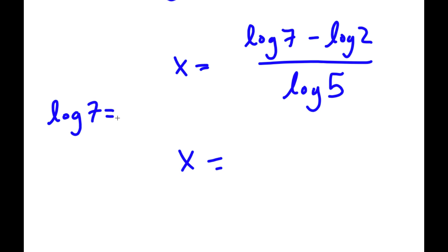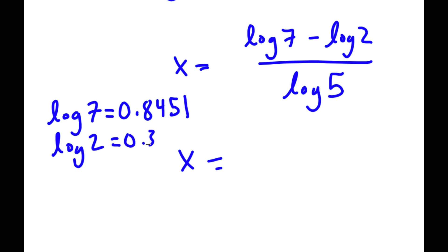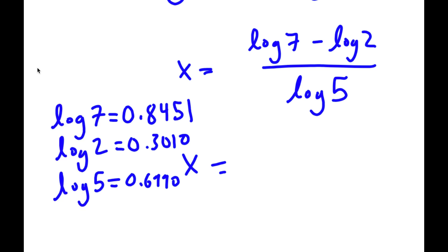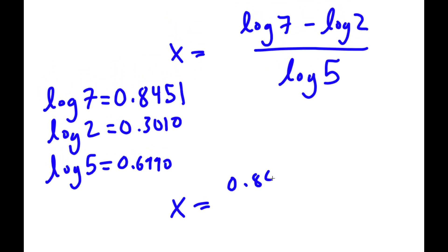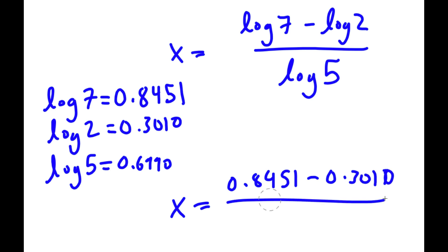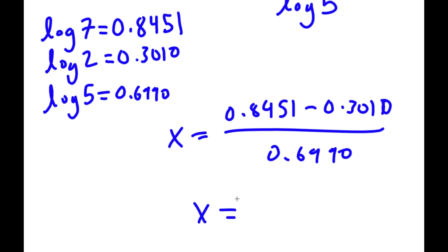Log 7 is equal to 0.8451, log 2 is equal to 0.3010, and log 5 is equal to 0.6990. So x is equal to 0.8451 minus 0.3010 all over 0.6990, meaning x is equal to 0.5441.